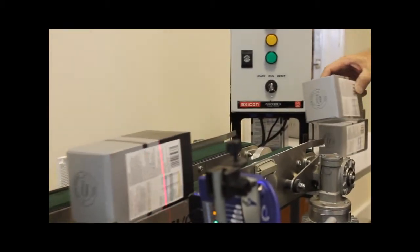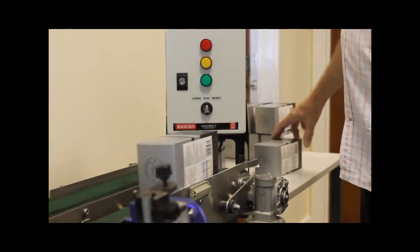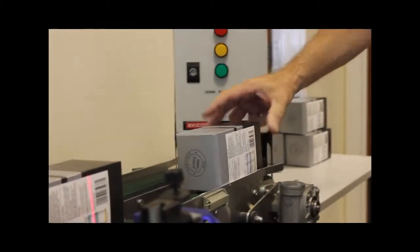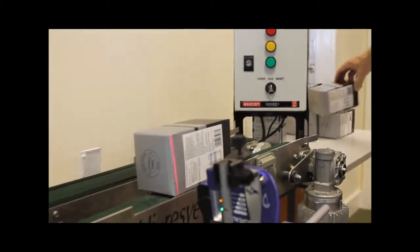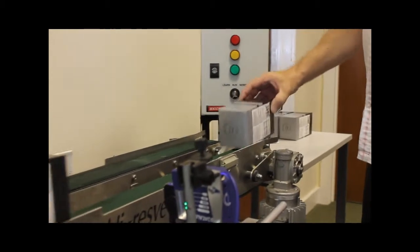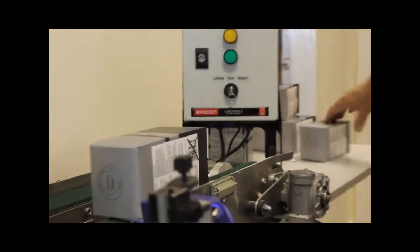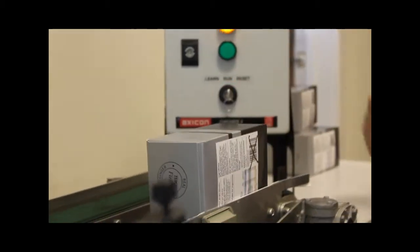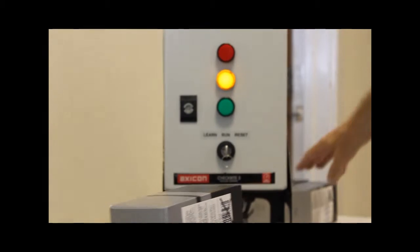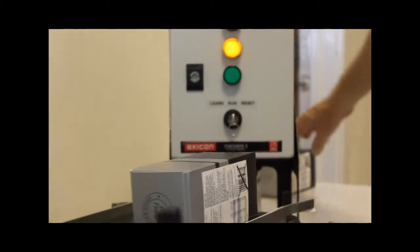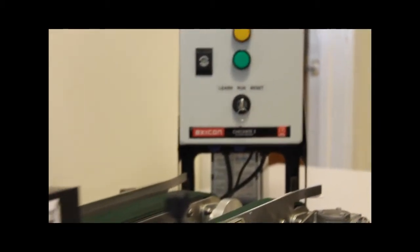The AXICON CheckWrite 5 will also detect no reads caused by missing, damaged, or creased barcodes. By default the CheckWrite 5 will indicate with an amber light each consecutive no read up to a maximum of 5 times. After which the red reject light will also illuminate.